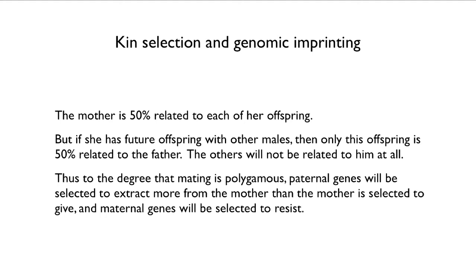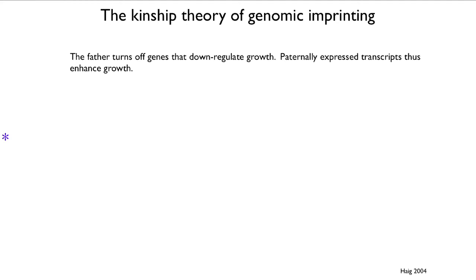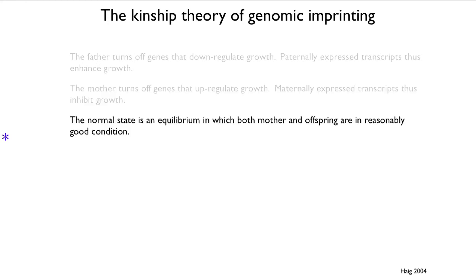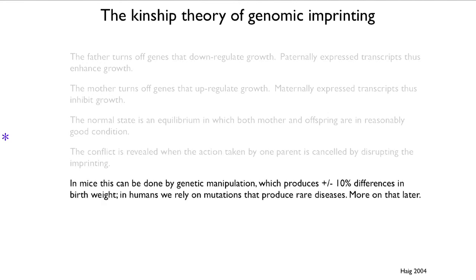The father's genes turn off genes that down-regulate growth, so paternally expressed transcripts enhance growth. The mother turns off genes that up-regulate growth, so maternally expressed transcripts inhibit growth. The normal state is an equilibrium in which mother and offspring are in good condition. However, if that equilibrium is disrupted — as can be done in mice through genetic manipulation — it produces a roughly plus or minus 10% difference in birth weight. In humans, we rely on mutations that produce rare diseases.